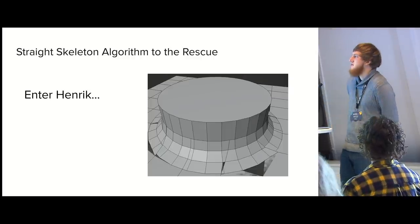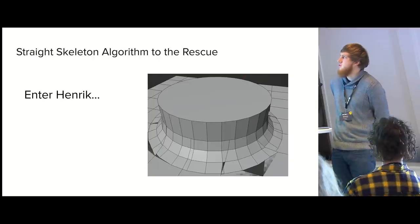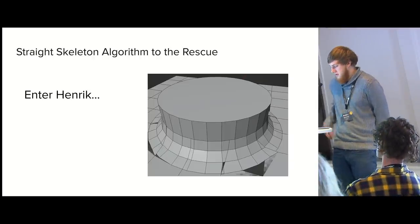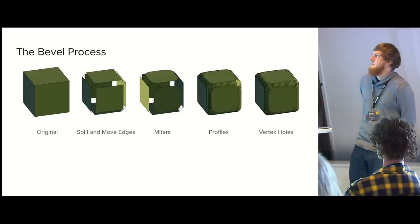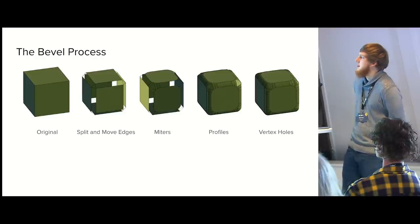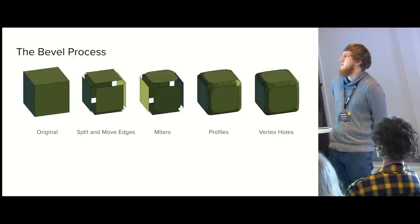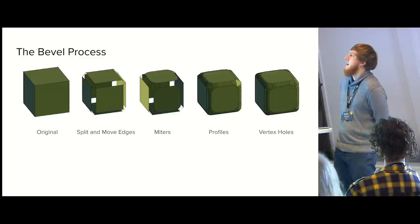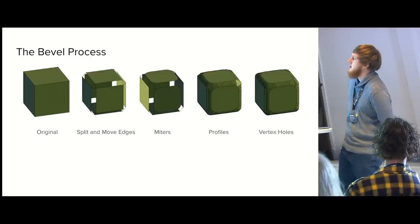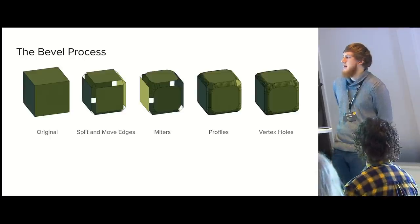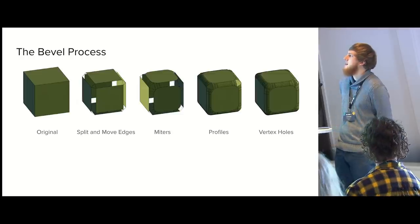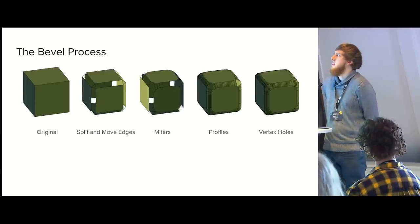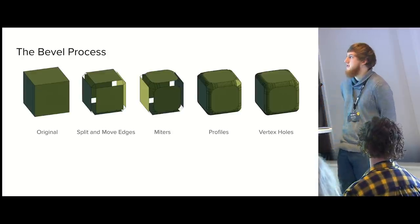Thanks. To fix this mess, we looked at two solutions and the best one was the straight skeleton. Let's look at the bevel process again. This is the basic process: we start with some mesh like a cube, then we split up all the edges we want to bevel, keep in mind which vertices go together, do some post-processing for the miters, add the profiles, and then close the vertex holes. The problem with bevel after Boolean appears directly in the first step — these first polygons often self-intersect and are not simple polygons anymore. That's the step where we want to introduce our new algorithm.